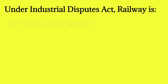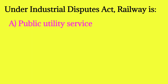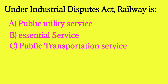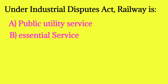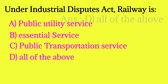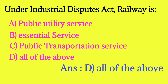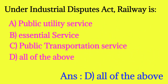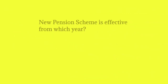Under the Industrial Dispute Act, railway is classified as: Public Utility Service, Essential Service, Public Transportation Service — Option D is all of the above. The answer is all of the above.